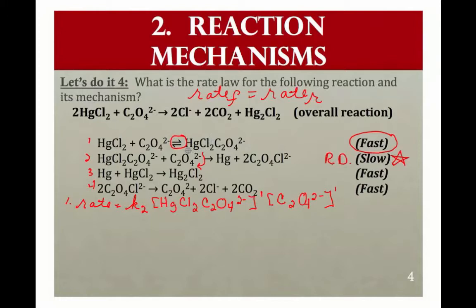Now hopefully you have noticed a problem with this, and that's that this mercury chloride oxalate ion is formed and then disappears. Substances that form and disappear are intermediates and they cannot show up in our rate law expression. So I need to find something to substitute in for that, and that's where that fast equilibrium is going to come into play.